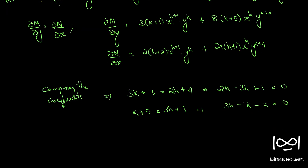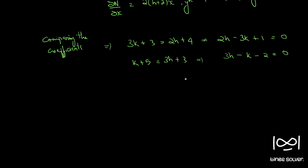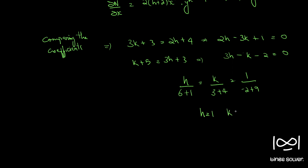Solving these two simultaneous equations using the cross-multiplication method: h equals 7 by 7 which is 1, and k equals 7 by 7 which is 1. So our integrating factor x raise to h into y raise to k becomes x raise to 1 into y raise to 1, giving integrating factor as x·y.